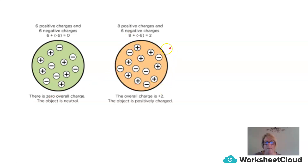In this diagram, we have eight positive charges and six negative charges. Eight plus negative six equals plus two, so the overall charge is plus two and we say the object is positively charged.